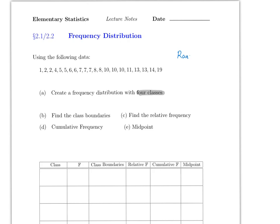The range is just the distance between the smallest and the biggest number. It's a very good idea to have the numbers ordered from smallest to biggest — ascending order. In this case the maximum is 19 and the minimum is 1, so the range is 19 minus 1 equals 18. Since we want four classes, we divide 18 by 4 to get 4.5, and we round that up to 5 so all classes have the same length.